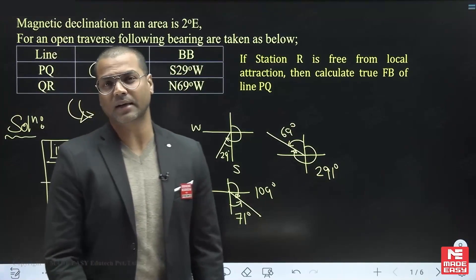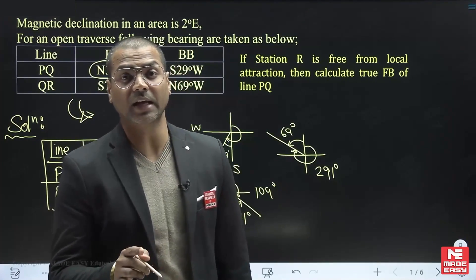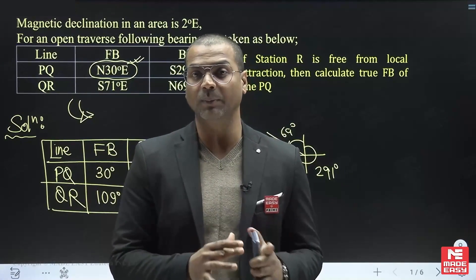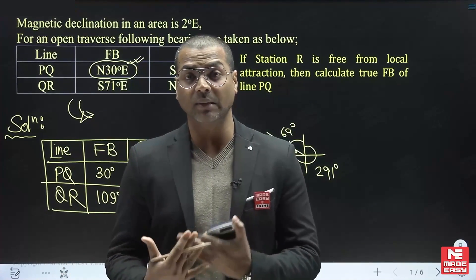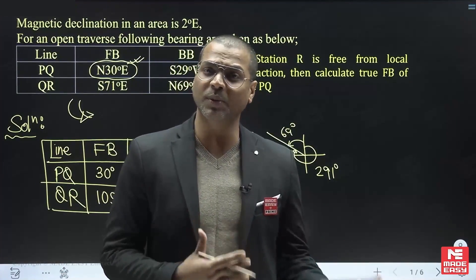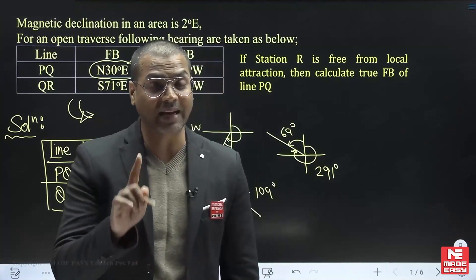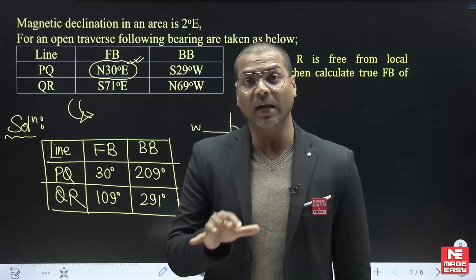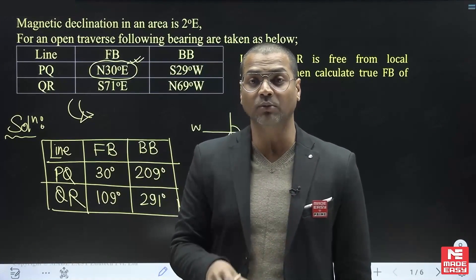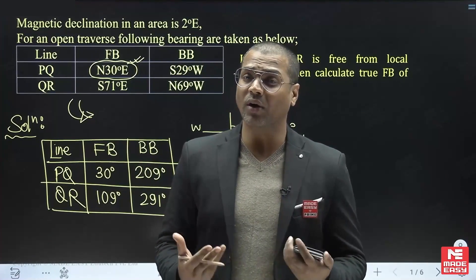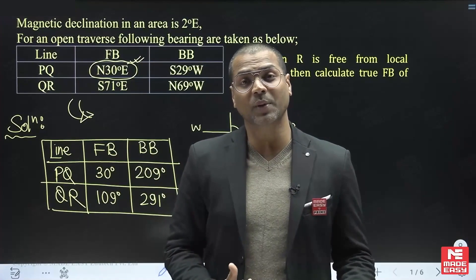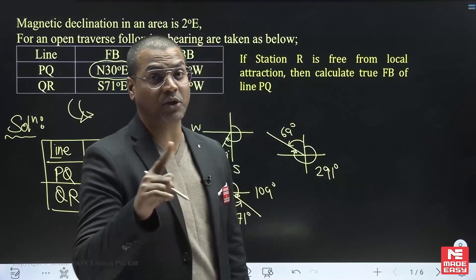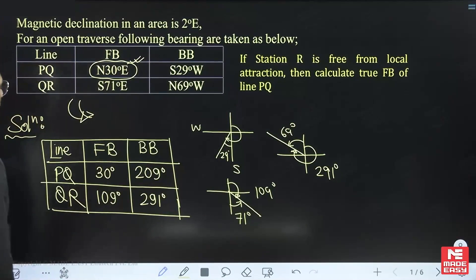Always keep in mind: converting all bearings to WCB is the correct and easy approach. There are two systems — WCB and QSB. You may solve directly in QSB, but the chances of making mistakes are higher in QSB. To avoid mistakes, convert to WCB first and then solve the problem.